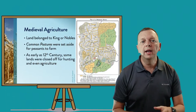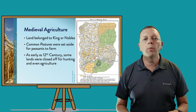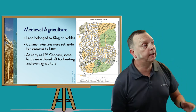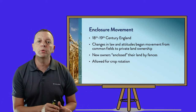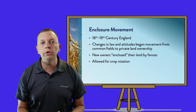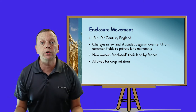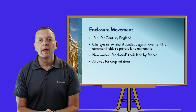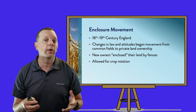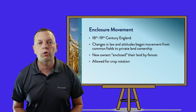Starting around the 12th century, some of these lands were portioned off and people started having ownership. But we didn't see this privatization of land until we had what is known as the enclosure movement. This happened between about the 18th and 19th century in England. Because of changes in law and attitudes, we start seeing a movement of ownership from these common pastures to actual private land ownership. Because when you had land, you would start putting fences around it — we call it the enclosure movement.